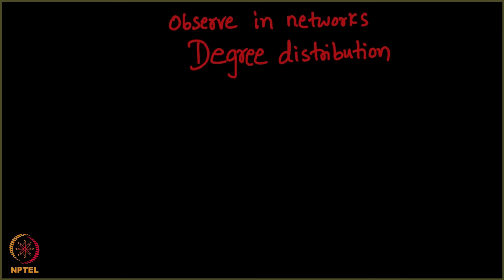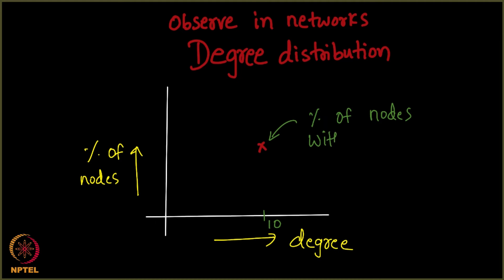By degree distribution, I mean x and y axis, here is my y axis and my x axis. Along my x axis will be degree of nodes and along my y axis will be percentage of nodes with that degree. So, with that I mean if you have something like 10 here, this point will denote the, let me just write that down so that it sinks into your minds. This denotes the percentage of nodes with degree 10 and our big question right now is how does this plot look like? How does this plot look like?